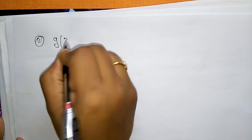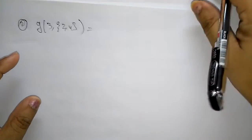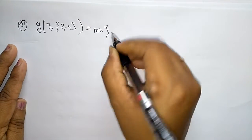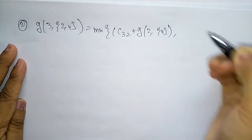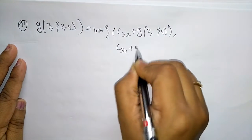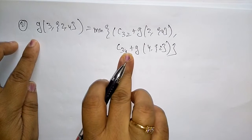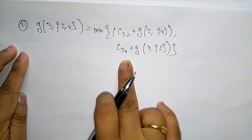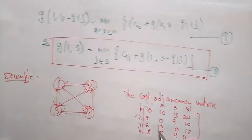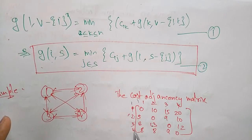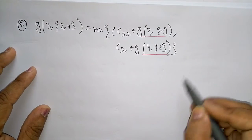For g(3, {2,4}), applying the same formula: minimum of c32 plus g(2, {4}), and c34 plus g(4, {2}). From the adjacency matrix we know c32 and c34, but we don't yet know g(2, {4}) and g(4, {2}).